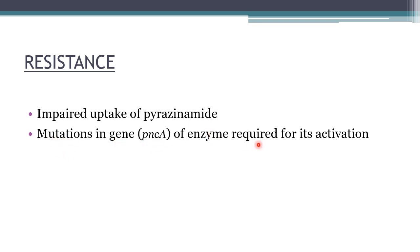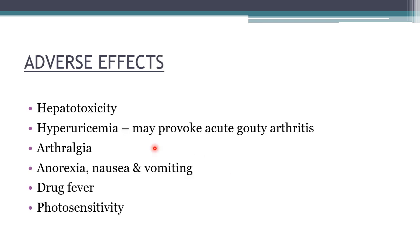Pyrazinamide produces hepatotoxicity — all first-line anti-tuberculous drugs except ethambutol and streptomycin are hepatotoxic, so liver function tests must be monitored. It can also produce hyperuricemia, which may provoke acute gouty arthritis; if hyperuricemia is asymptomatic, there is no need to stop the drug but uric acid levels should be monitored. Other adverse effects include arthralgia, anorexia, nausea, vomiting, drug fever, and photosensitivity.